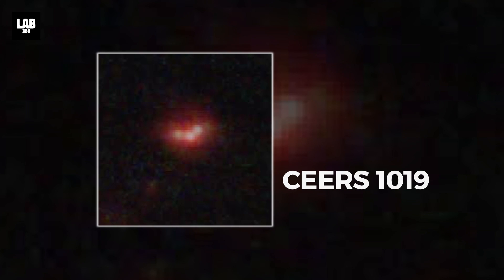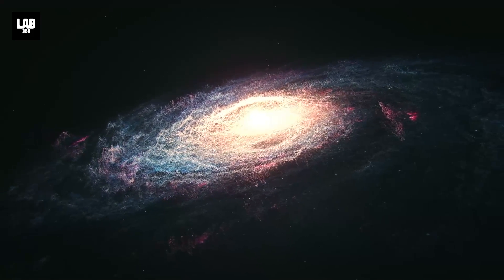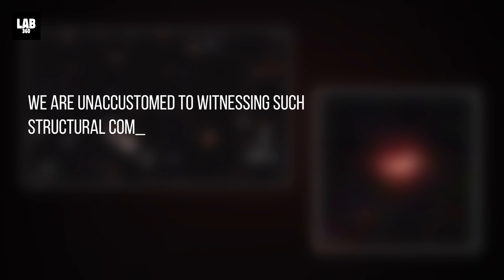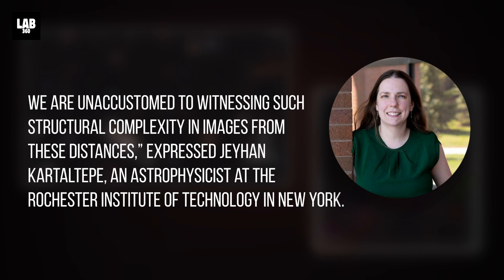Sears 1019 and its black hole boast several unique features. It might not be a singular galaxy as most galaxies usually appear. Sears 1019 differs in this regard. As depicted in the image below, it consists of three luminous clusters. We are unaccustomed to witnessing such structural complexity in images from these distances, expressed Jehan Cardleteep, an astrophysicist at the Rochester Institute of Technology in New York.